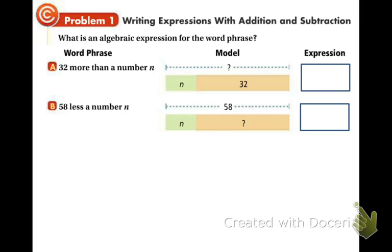And you can see in the model in the middle that that will help us. 32 more than a number N. Well, what does more than mean? If I were to give you 32 more objects, you would have an additional amount. So that means we add. So our expression is going to be 32 plus N.